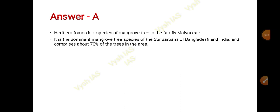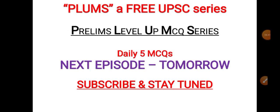Since it is a mangrove species, think of mangrove places. It is one of the dominant mangrove tree species of the Sundarbans of Bangladesh and India, and it comprises 70% of the trees in that area. That is why the answer is A — Sundarbans. You should also know that mangroves are not just present in Sundarbans in India.